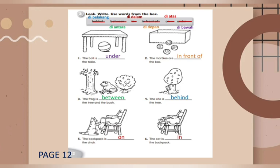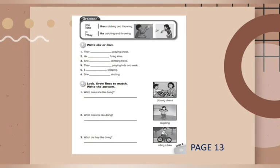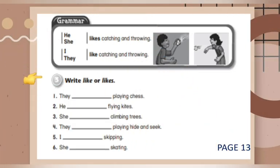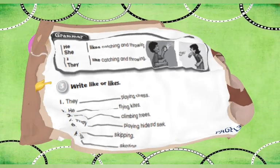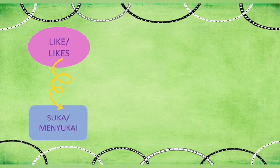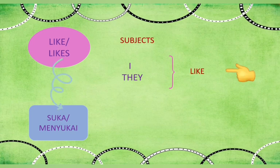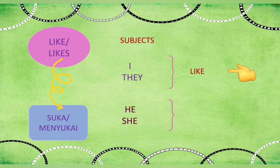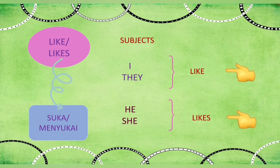Next, we go to page 13. Exercise 3: Write like or likes. Like or likes — dalam bahasa Indonesia artinya suka atau menyukai. Subject I yang artinya saya, dan they yang artinya mereka, as plural subjects, are followed by like: I like, they like. Meanwhile, he and she are followed by likes, because he dan she are singular subjects yang artinya hanya satu orang.